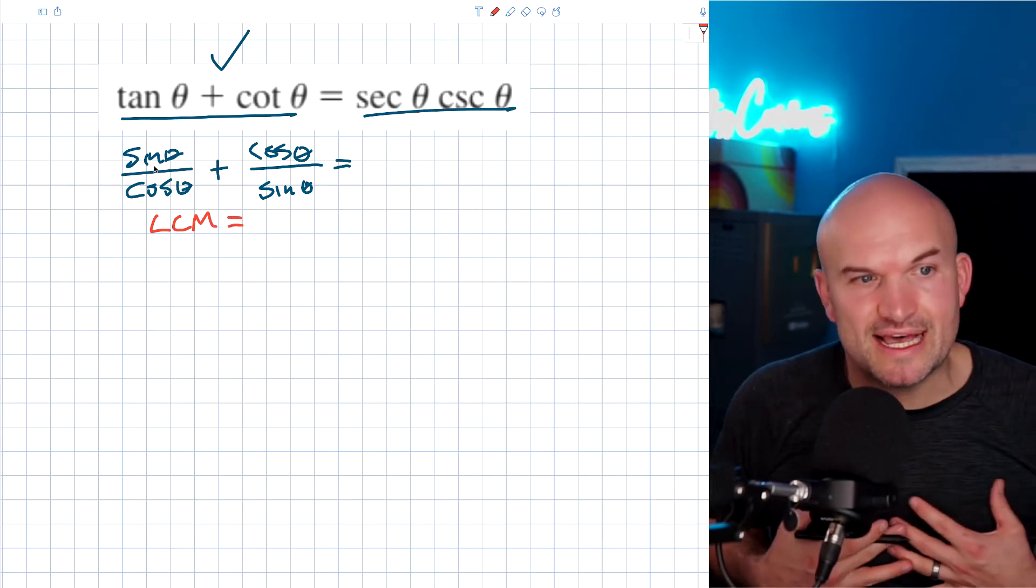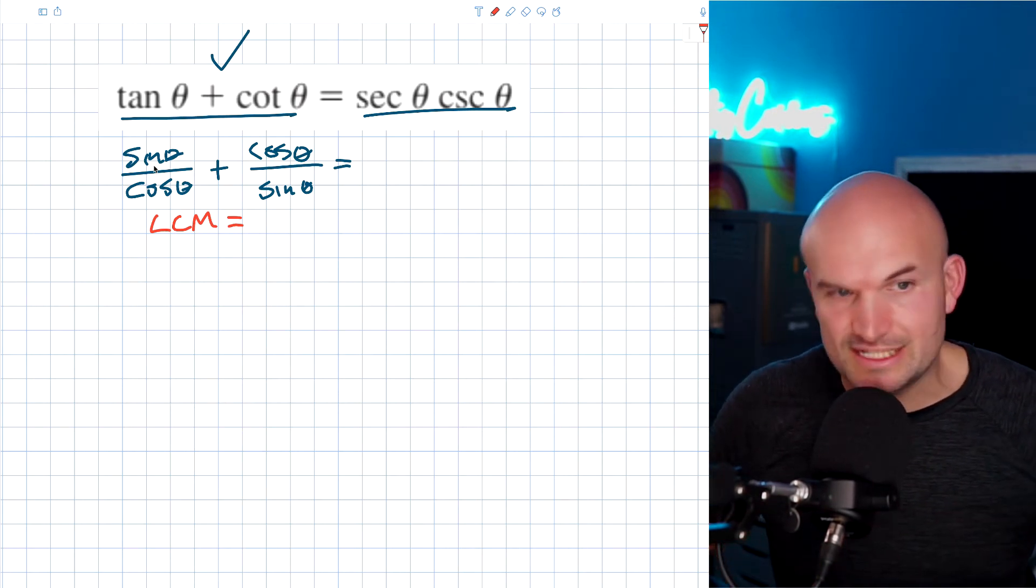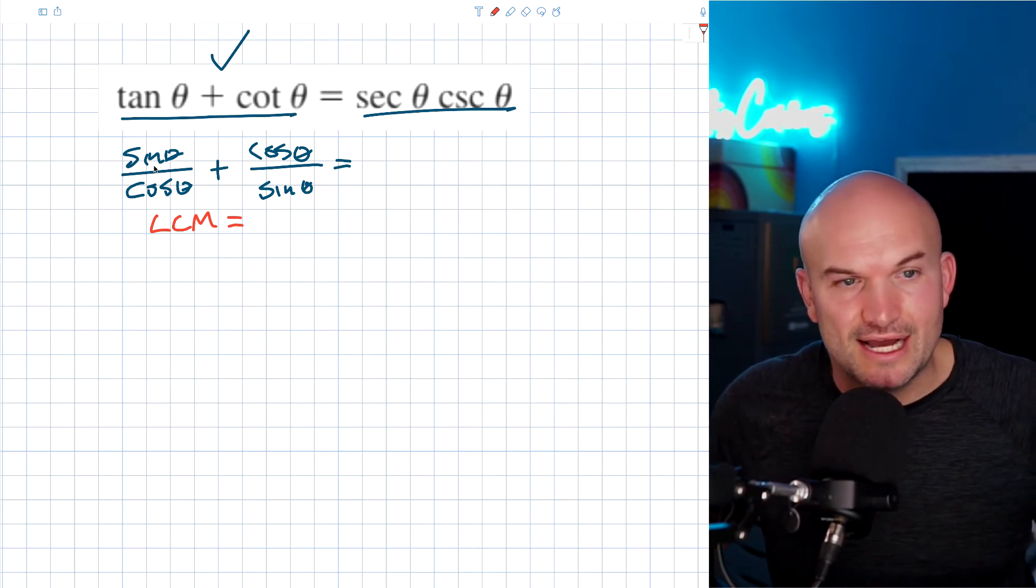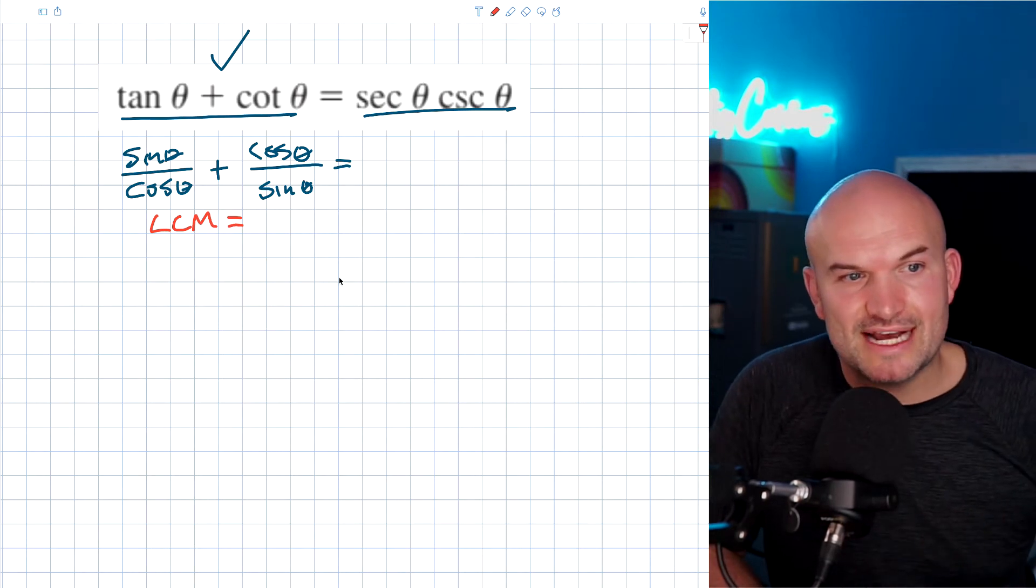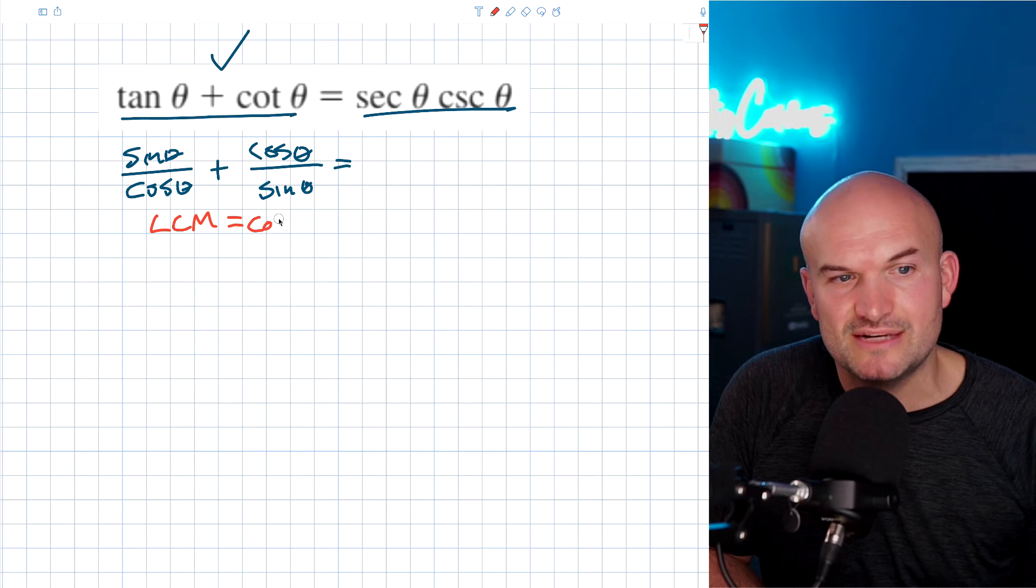So what is going to be the smallest expression that cosine of theta and sine of theta are both going to divide into? Well, the easiest way to identify an expression that they both divide into is actually just to take the product of these two denominators. So what I can do is say that's going to be cosine of theta times sine of theta.